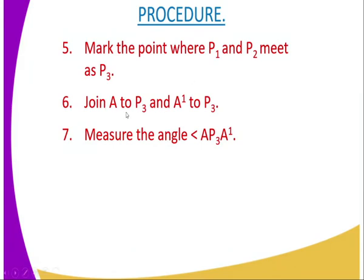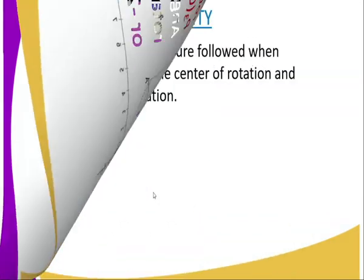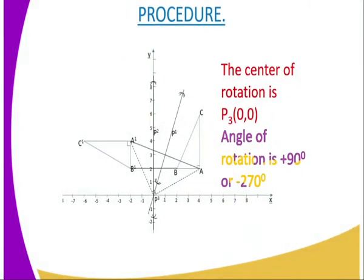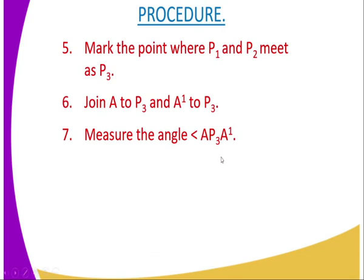Then you are supposed to join A to P3, and also join A1 to P3. You can see here — A is joined to P3 and A1 is joined to P3. The next step is to measure the angle A-P3-A1.